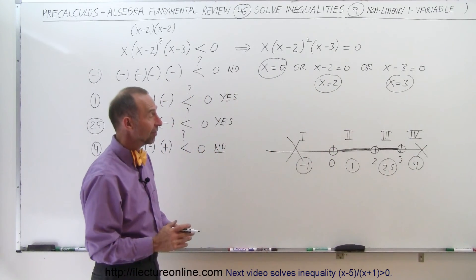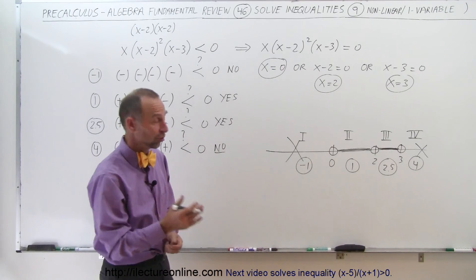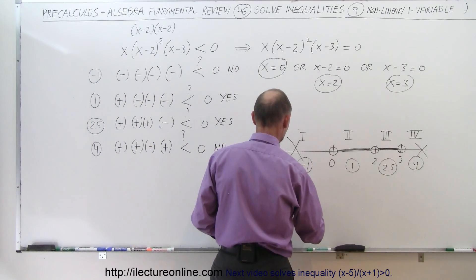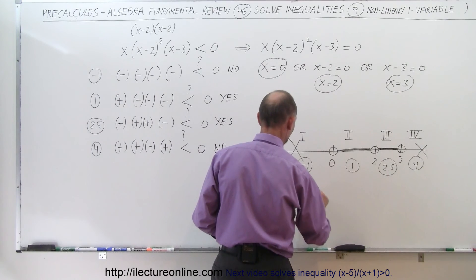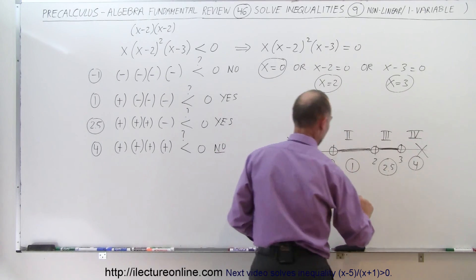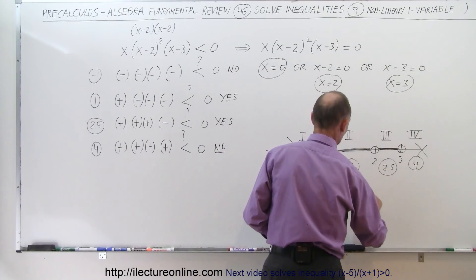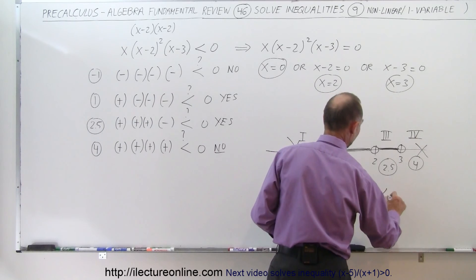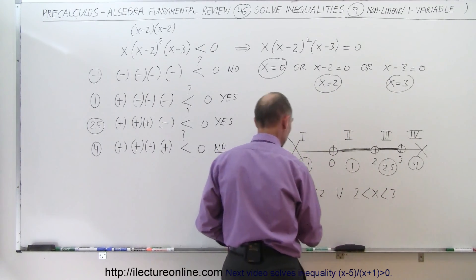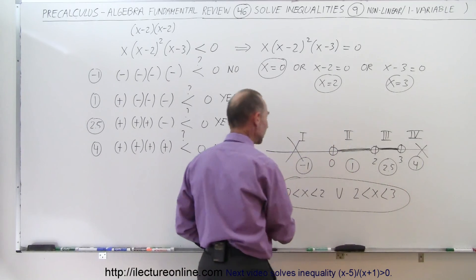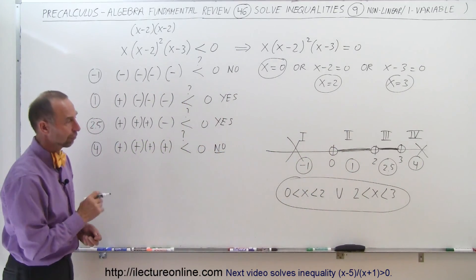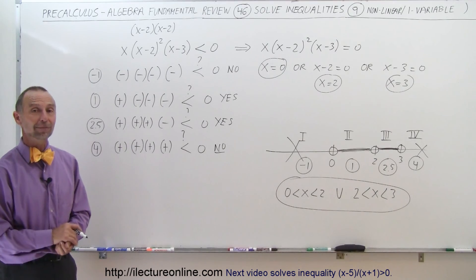So the solution is any number between 0 and 2, written as 0 less than X less than 2, and any number between 2 and 3, written as 2 less than X less than 3. Those are the two regions that satisfy the inequality, and that is the final solution for this problem.